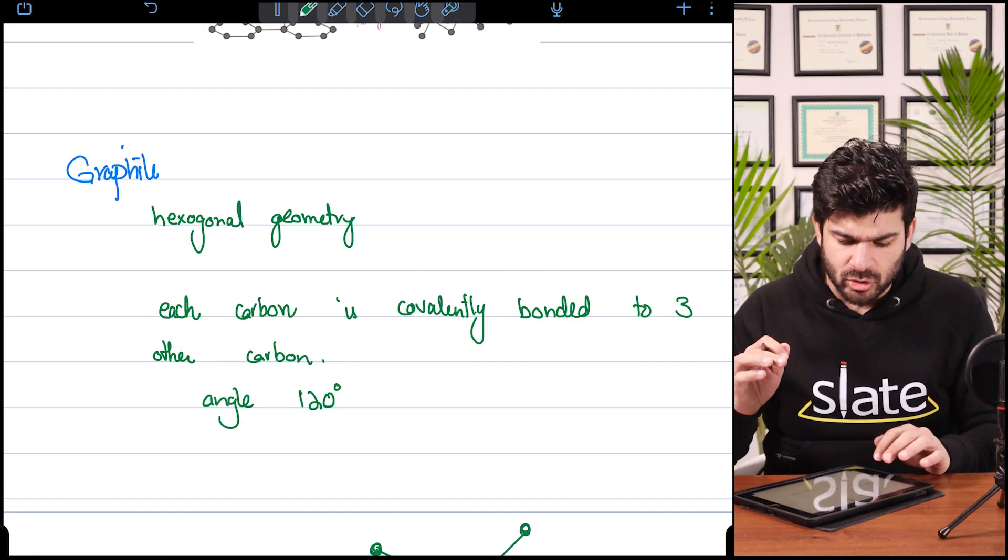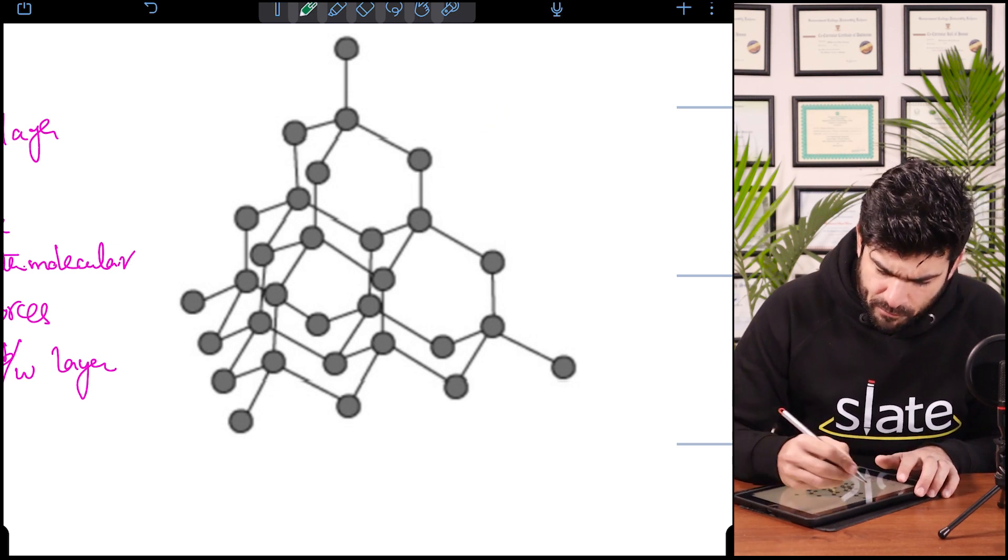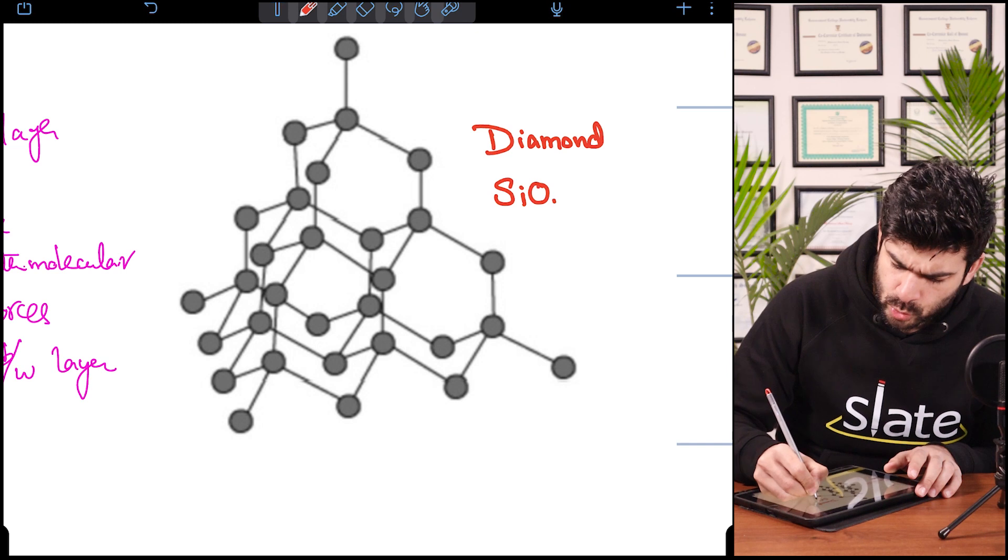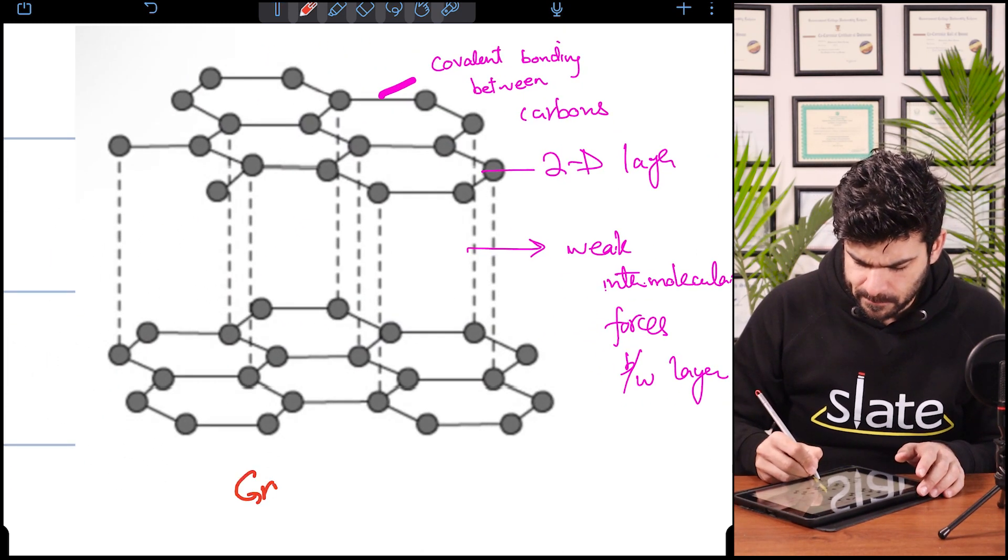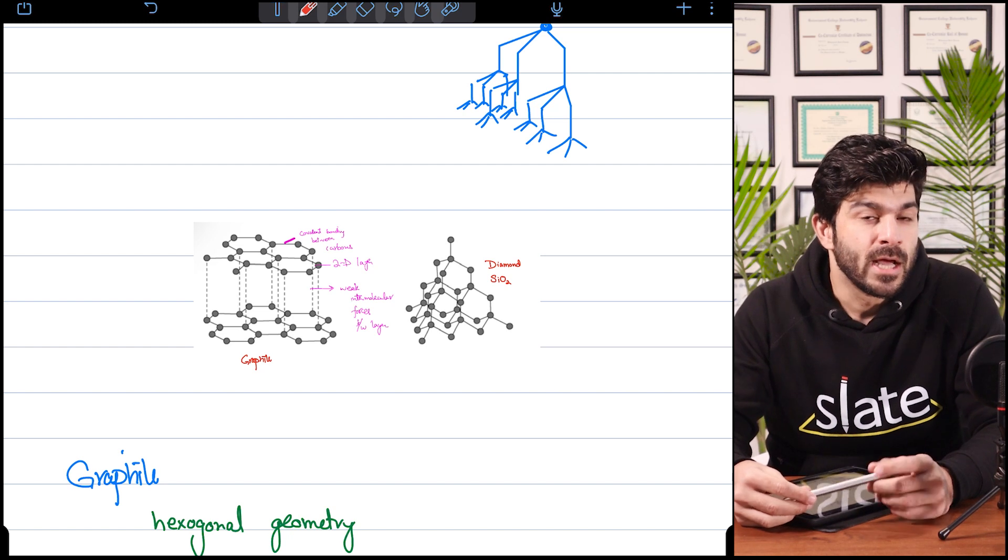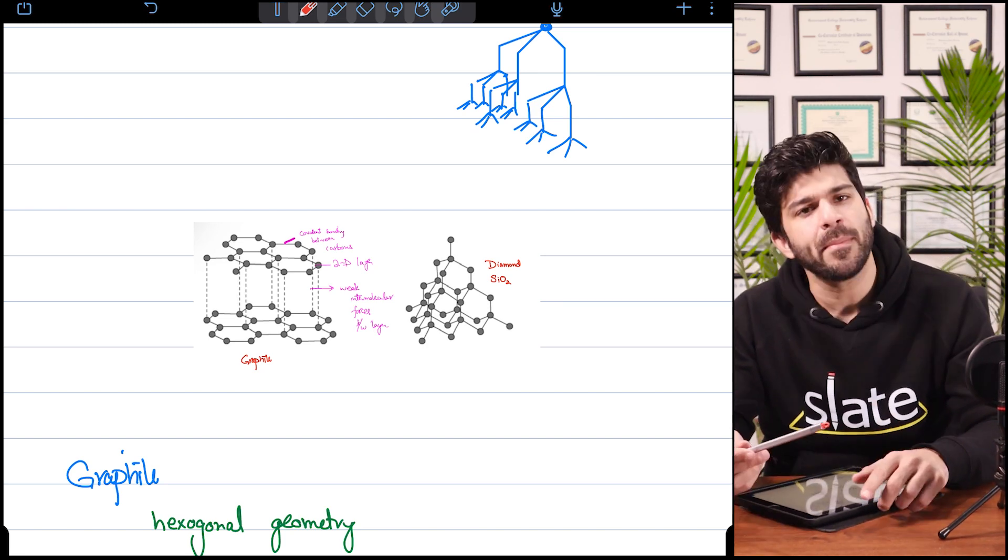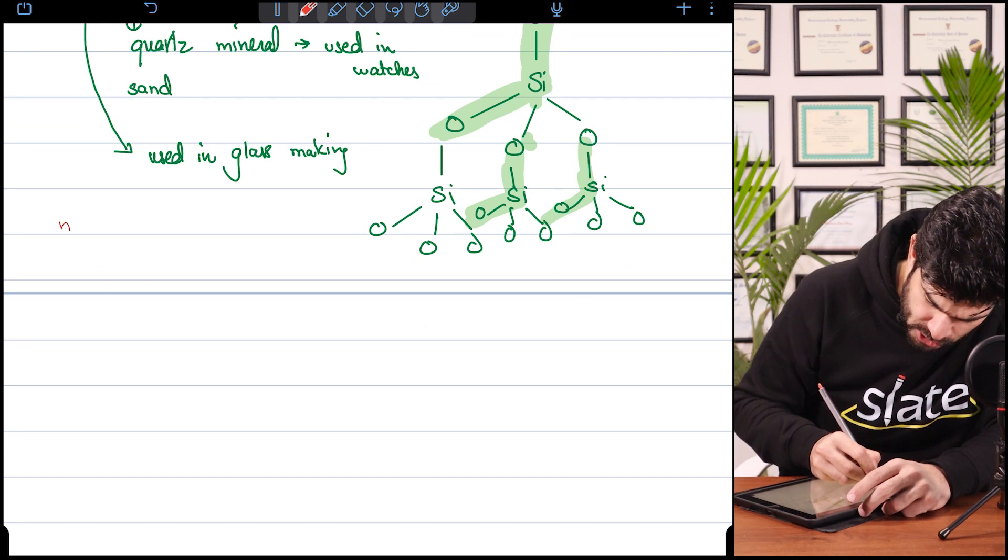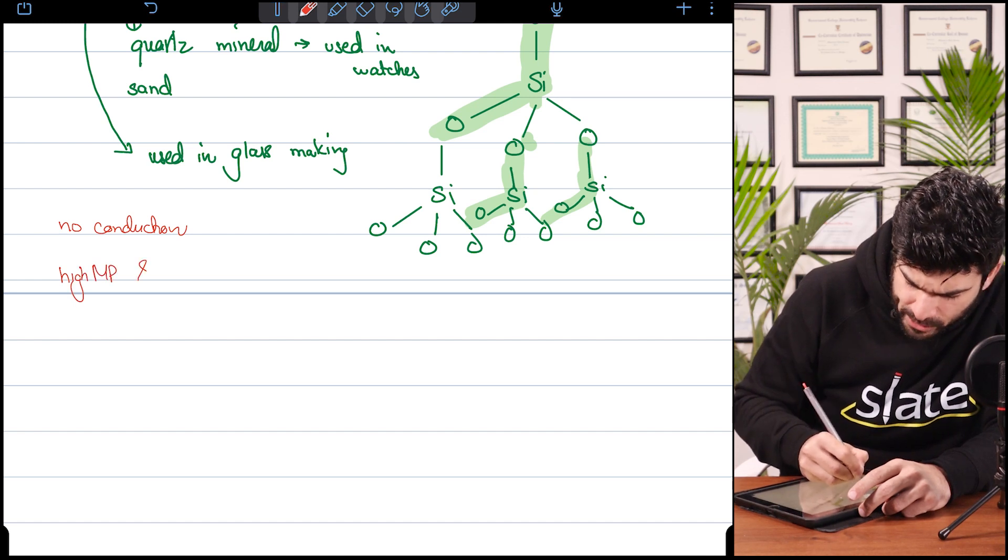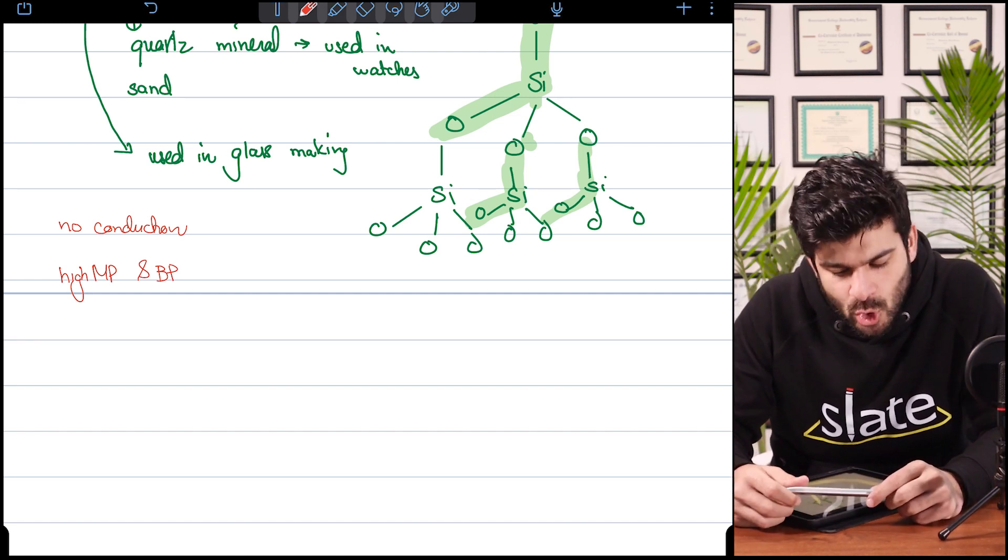When you get the structure of silicon dioxide, this is the structure. This is the structure of both diamond and SiO2, and this is the structure of graphite. These are the three giant covalent compounds in your syllabus and they have different properties. Graphite being the only covalent compound that can also conduct electricity. Silicon dioxide has high melting and boiling points but no conduction. That's what we know about giant covalent compounds. In the next video we'll talk about metallic bonding. Thank you so much for being here with me.